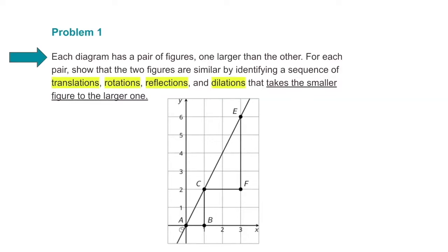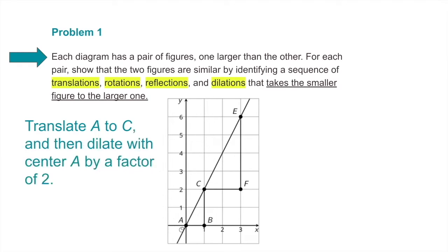Here's a pair of figures. In the lower left-hand corner you have triangle ABC, and above it to the right, triangle CFE. Translate point A to point C. Then dilate with center A by a factor of 2. From A to B it's 1 unit; from C to F it's 2 units — that's a scale factor of 2. From point B to point C it's 2 units, and from point F to point E it's 4 units — also a scale factor of 2.